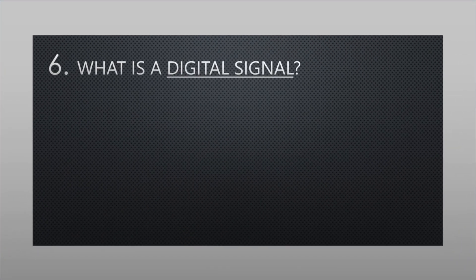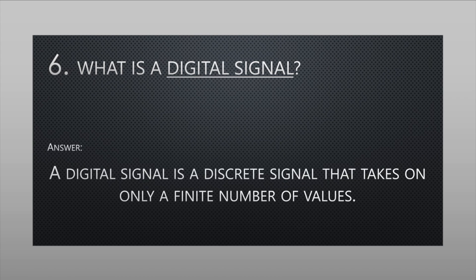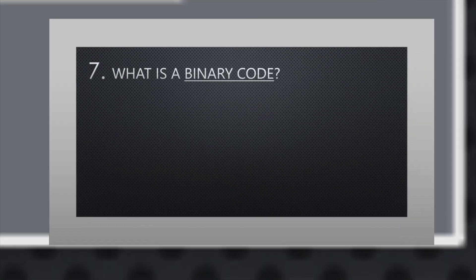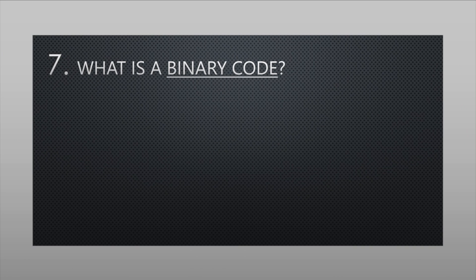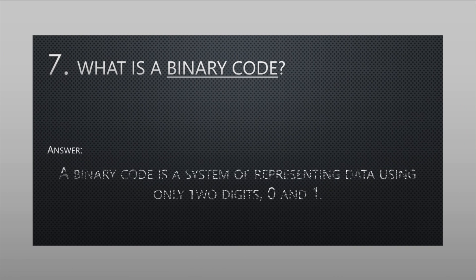What is a digital signal? A digital signal is a discrete signal that takes on only a finite number of values. What is a binary code? A binary code is a system of representing data using only two digits, zero and one.